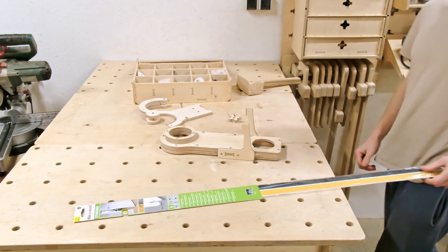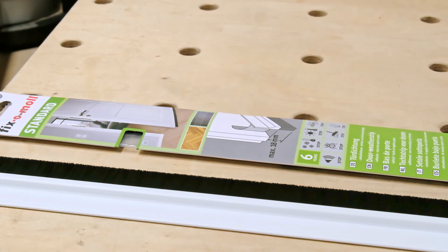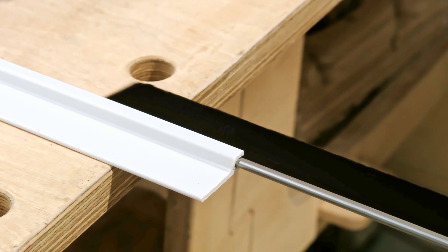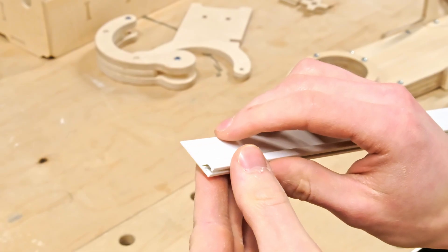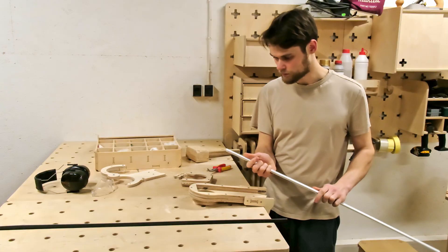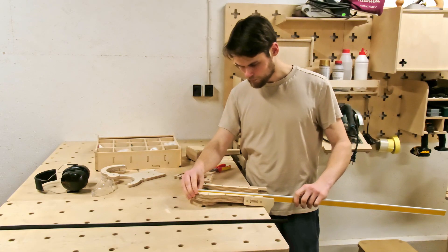We have to attach the brush seals inside the dust shoe. The one we got consists of a plastic profile and a brush component, which means we have to cut the profiles into proper length and then we can cut the brushes at the matching lengths.